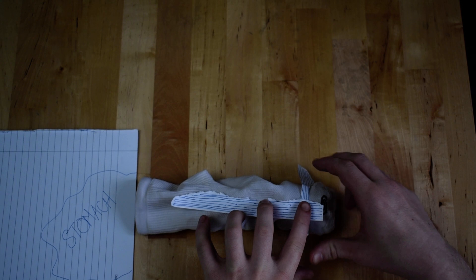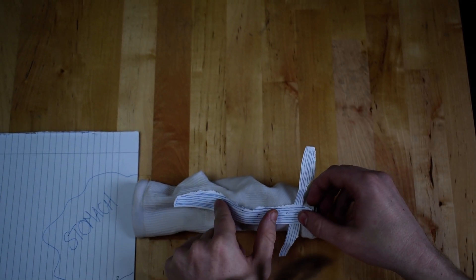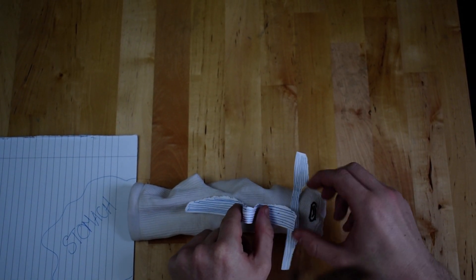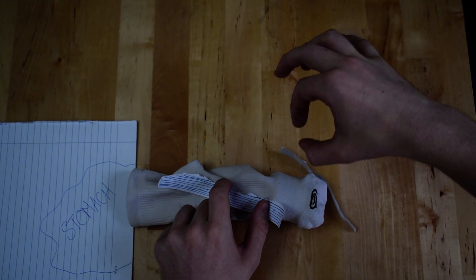So this means when the longitudinal one contracts, it will get shorter like this. And when the circular one contracts, it will get smaller like this.